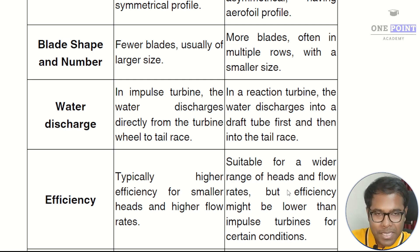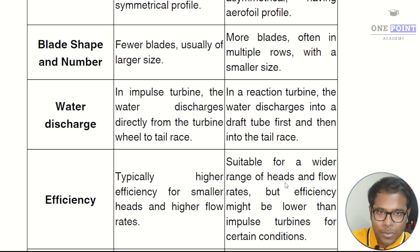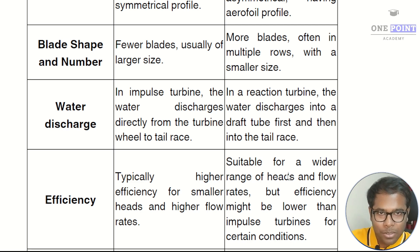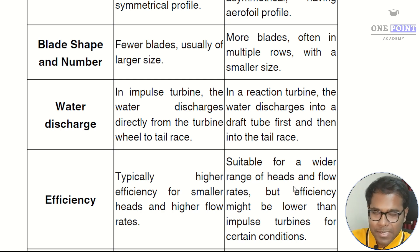The efficiency of a reaction turbine is much lower due to two factors. First, there are a larger number of blades, so there will be huge mechanical and hydraulic losses. Secondly, there are additional components like the draft tube which cause further efficiency drops. In general, the efficiency of a reaction turbine will be lesser than that of an impulse turbine.